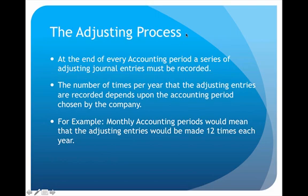Now regarding the actual adjusting process — when do you do it, and how often do you have to go through this? It actually has to be performed at the end of every accounting period. So again, it depends on the company. If you're following an annual reporting period, you would only do the adjustments once a year. But if you're following a monthly accounting period, you would do these adjustments every single month, or 12 times a year.